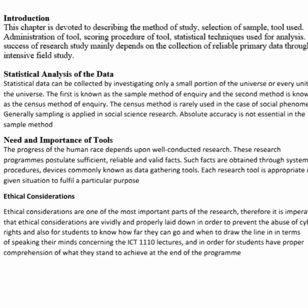The census method is rarely used in the case of social phenomena; generally, sampling is applied in social science research. Absolute accuracy is not essential in the sample method. The progress of the human race depends upon well-conducted research, which requires sufficient, reliable, and valid facts. Such facts are obtained through systematic procedures and devices, commonly known as data gathering tools. Each research tool is appropriate in a given situation to fulfill a particular purpose.